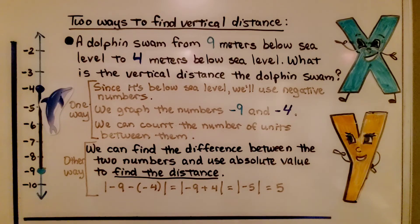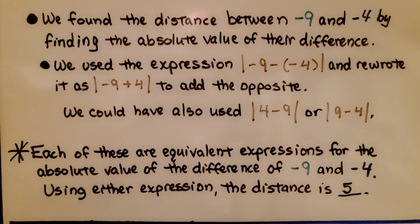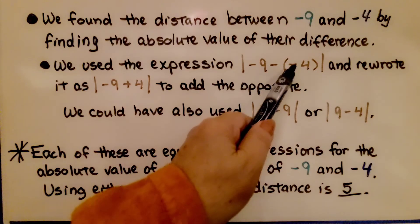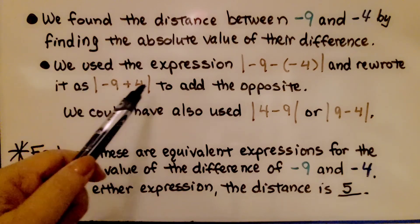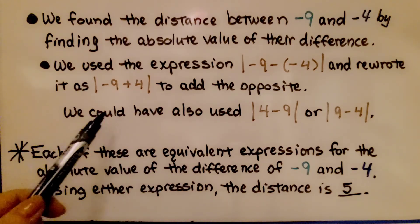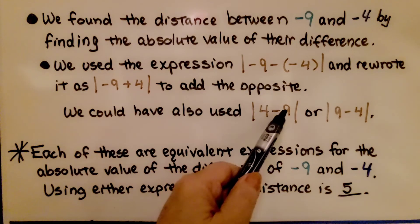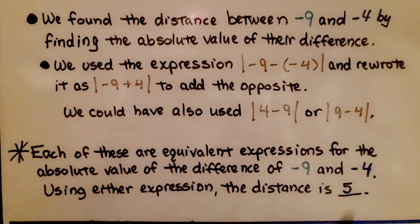For the dolphin problem, we found the distance between negative nine and negative four by finding the absolute value of their difference. We used the expression absolute value of negative nine minus negative four, and rewrote it as the absolute value of negative nine plus four to add the opposite. We could have also used the absolute value of four minus nine, or the absolute value of nine minus four — we still would have gotten five. Each of these are equivalent expressions. Using either expression, the distance is five.